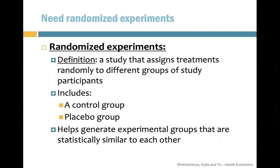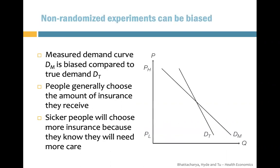We want to find evidence about whether people actually respond to price in their healthcare decisions, and we want to run randomized experiments. A randomized experiment is a study that randomly assigns people to control and treatment groups. At the end, we compare these two groups and draw conclusions about the treatment effect.